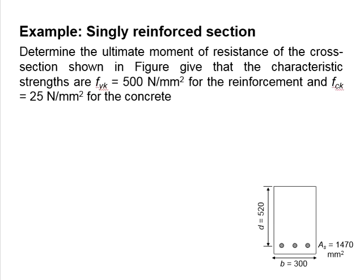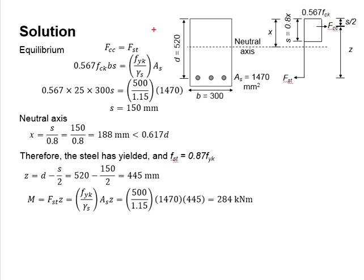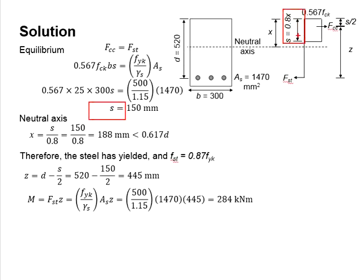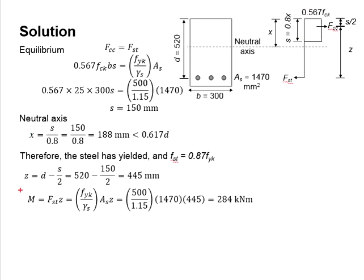In another example, the areas of reinforcement are given and the question asks us to determine the moment. To solve this, you need to construct the stress block diagram, apply sigma fx equals zero to determine the height of the stress block S, then find x to determine the lever arm, and finally get the moment by multiplying the steel force by the lever arm.